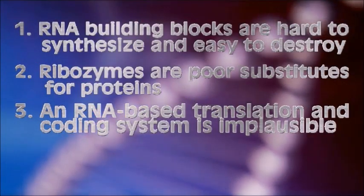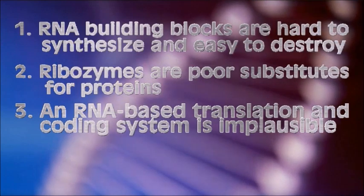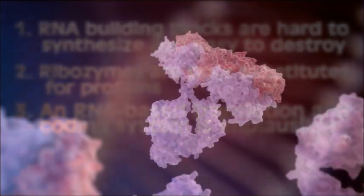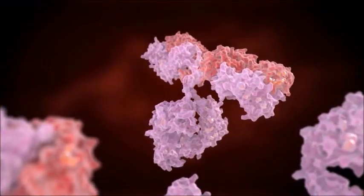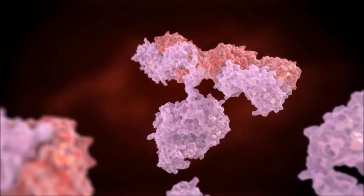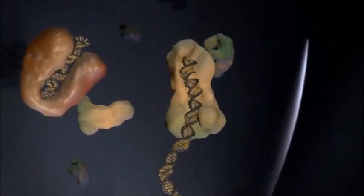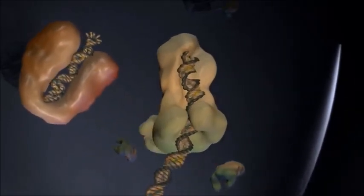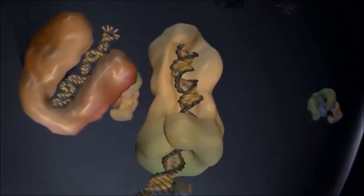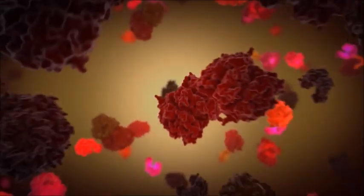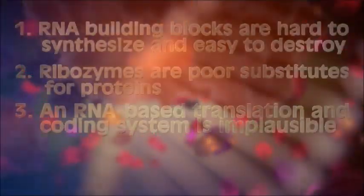Third, an RNA-based translation and coding system is implausible. In order for RNA to lead to DNA, at some point RNA would have had to produce proteins. Since it is proteins that build other proteins, RNA would have had to develop a coding and translation system based only on RNA while still generating the necessary information to build proteins. This doesn't seem plausible.